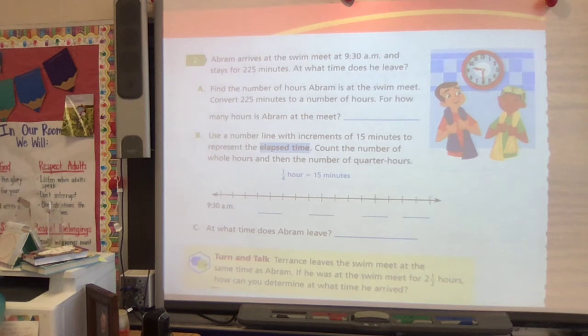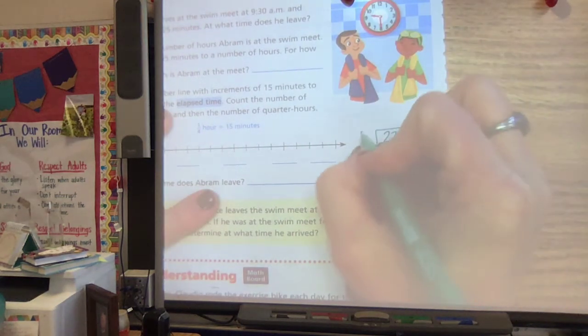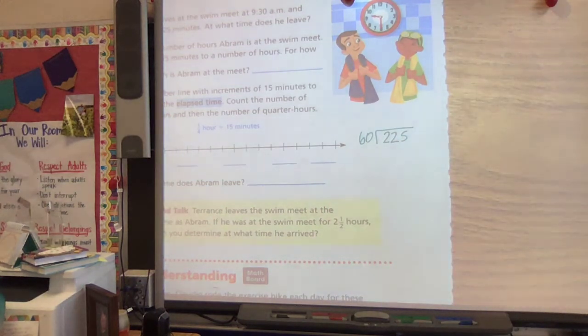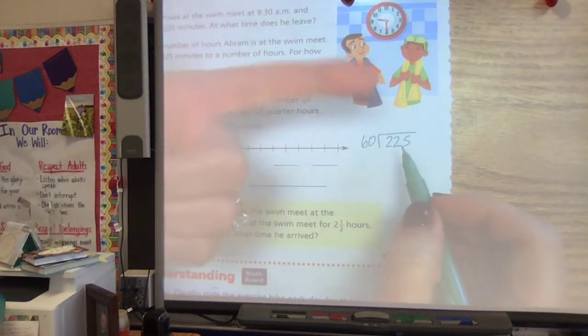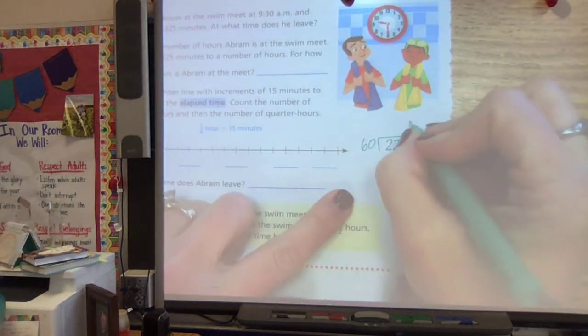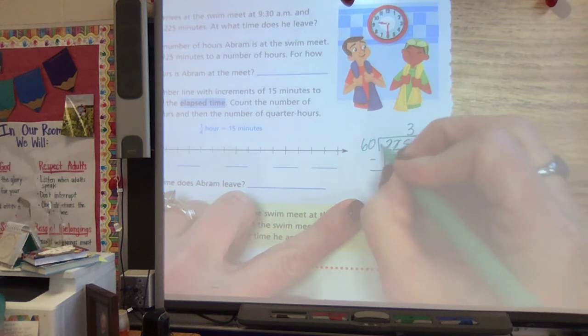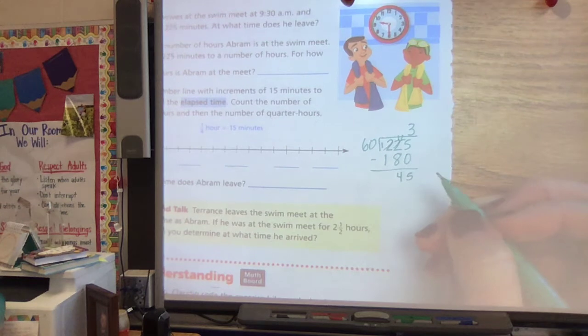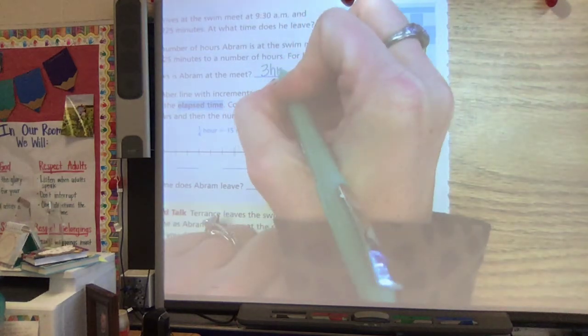So let's think about it. We've got 225 minutes. I'm going to use my space over here. I know I need to divide that by 60 to figure out how many hours he's there. So again, it's just three times. And I know three times 60 is 180. And so then that's three hours and there's 45 minutes left over. So he's there for three hours, 45 minutes.